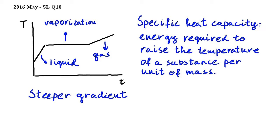Let's go back to the graph then and see what a steeper gradient means. A steeper gradient means that the temperature is increasing quicker as energy is supplied to the substance. In other words, less energy is needed to raise the temperature of the substance.